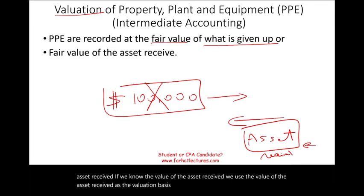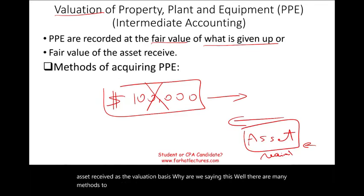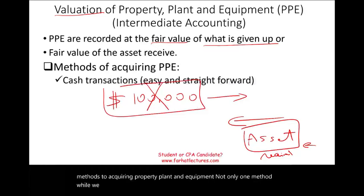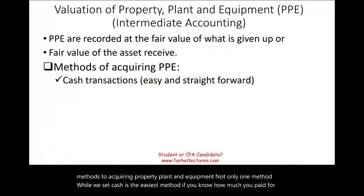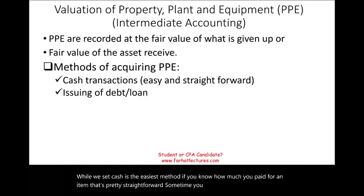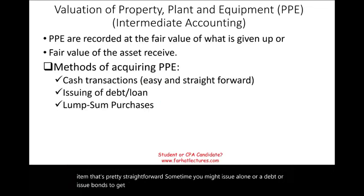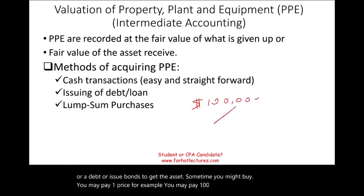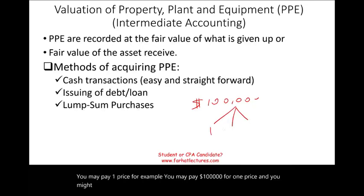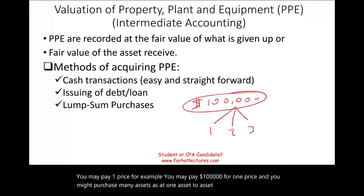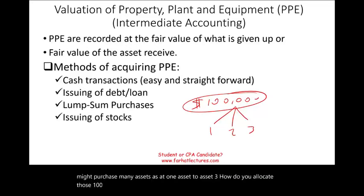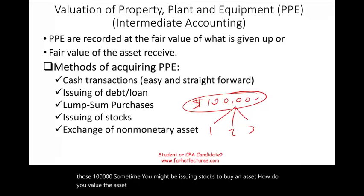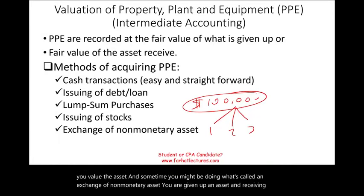Why are we saying this? There are many methods to acquiring property, plant, and equipment, not only one method. Cash is the easiest method. Sometimes you might issue a loan, a debt, or issue bonds to get the asset. Sometimes you may pay one price — for example, $100,000 — and purchase many assets: asset 1, asset 2, asset 3. How do you allocate that $100,000? Sometimes you might be issuing stocks to buy an asset. And sometimes you might be doing what's called an exchange of non-monetary assets — you are giving up an asset and receiving another asset. How do you record those assets?